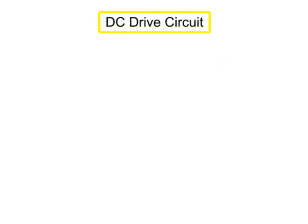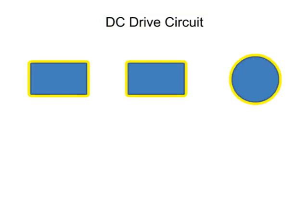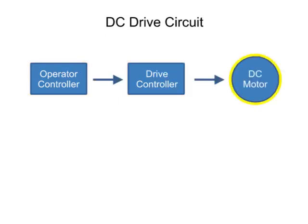A DC drive circuit is composed of three main components: an operator controller, a drive controller, and a DC motor.